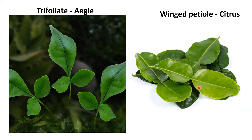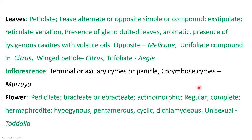You can see winged petiole in citrus. Coming to inflorescence: terminal or axillary cymes or panicle or corymb. Cymes are seen in Murraya. Flowers are pedicellate — that means a stalk is present — bracteate or ebracteate, actinomorphic, regular, complete, hermaphrodite, hypogynous with superior ovary, pentamerous, cyclic, dichlamydeous. An exception: unisexual flowers are found in Todalia, meaning male and female flowers are separate.